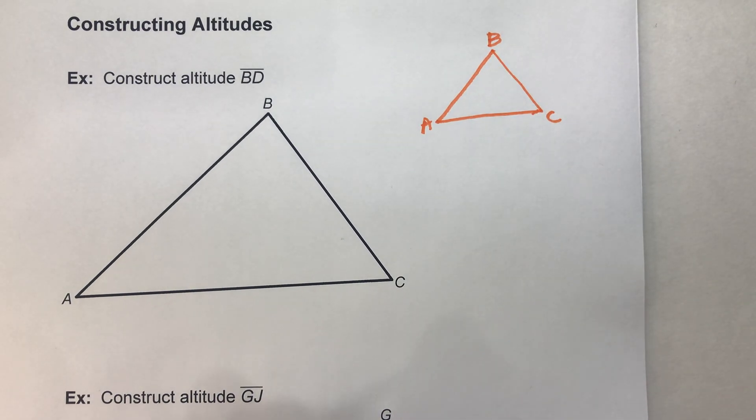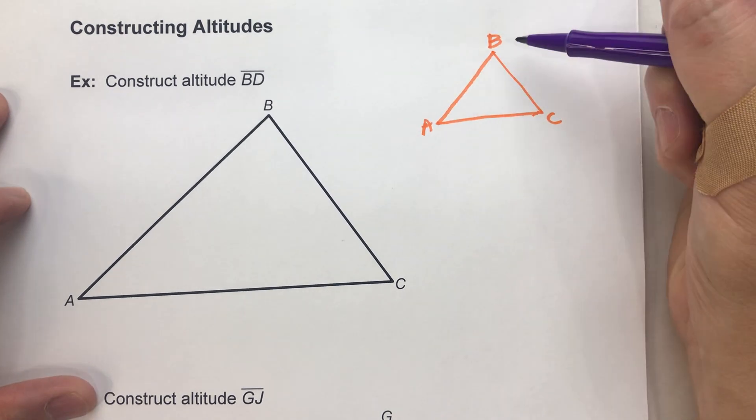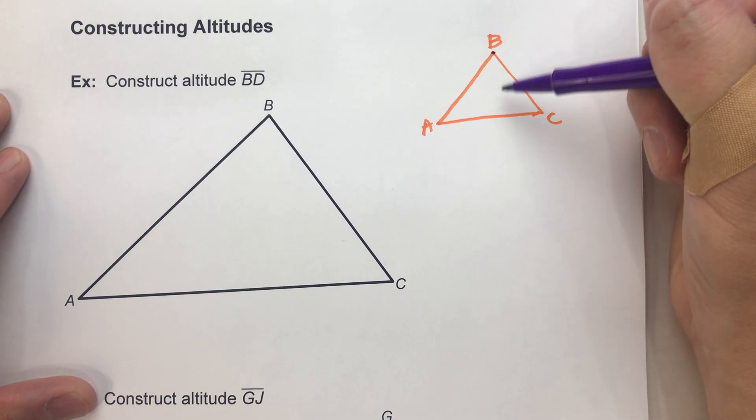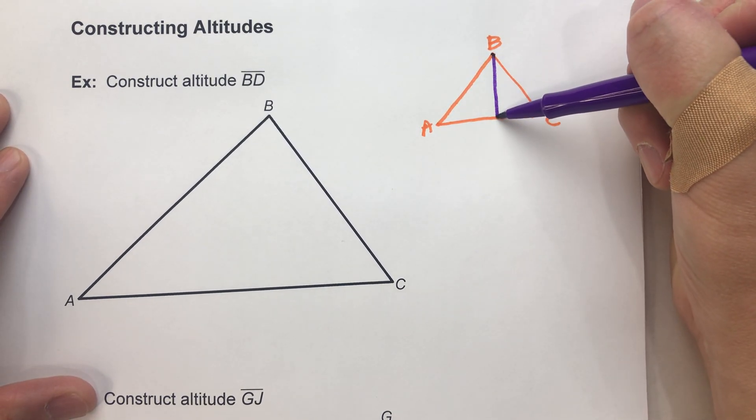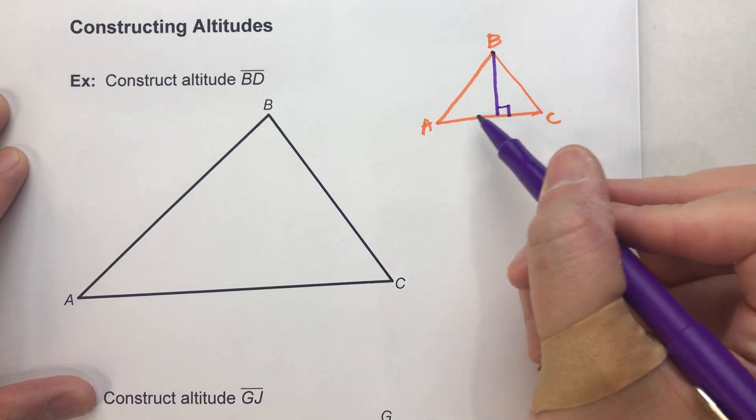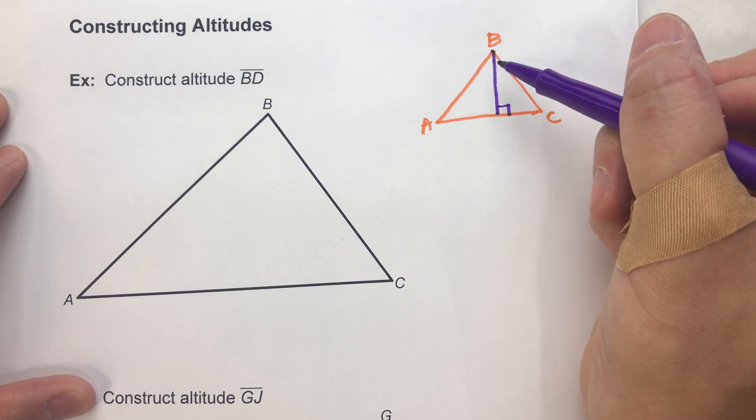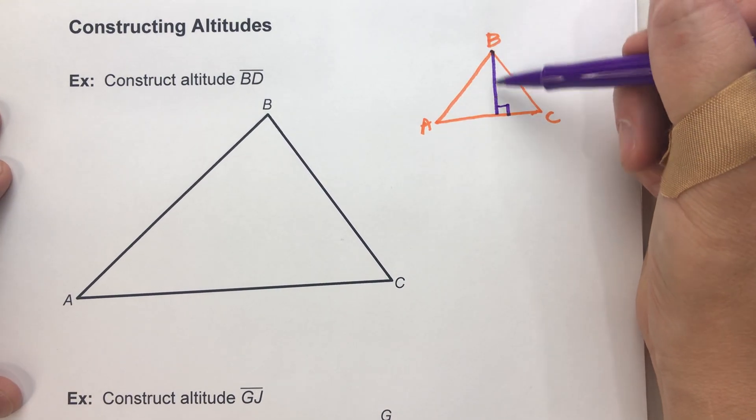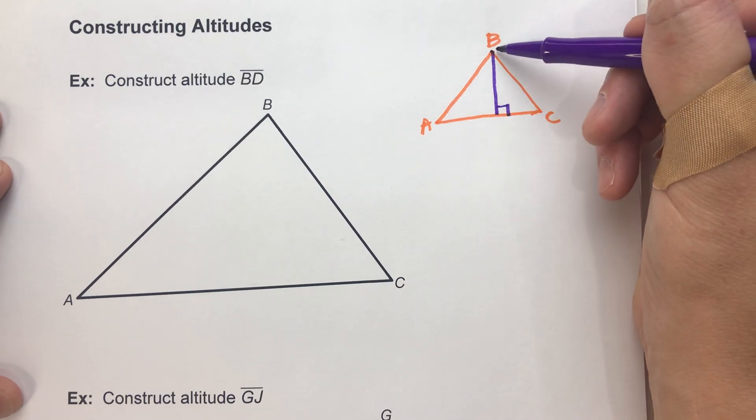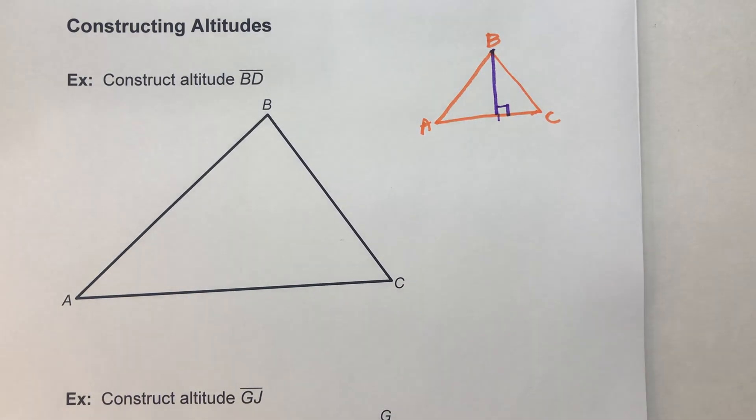The definition of an altitude is the line segment that goes from the vertex to the opposite side but perpendicular to that opposite side. So we want a segment that's perpendicular to segment AC but goes through point B just like that.